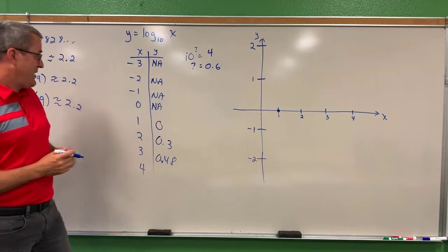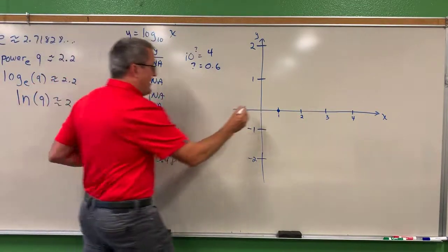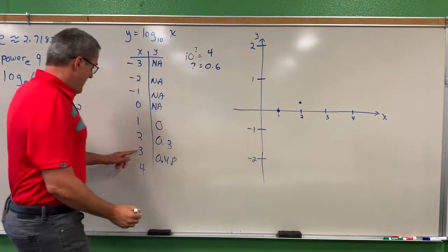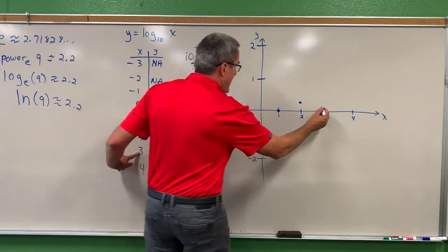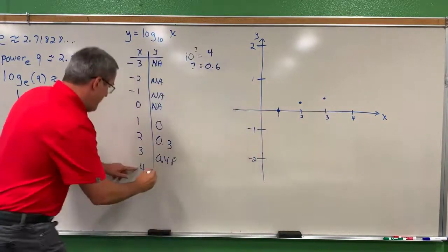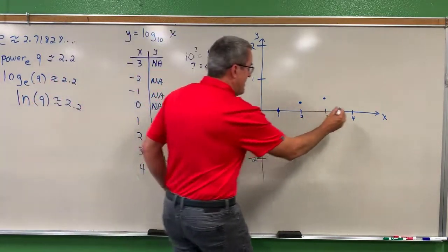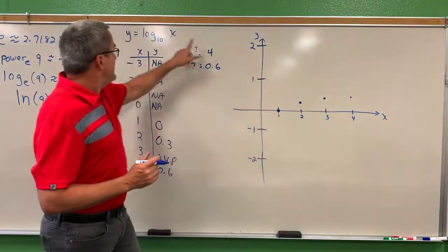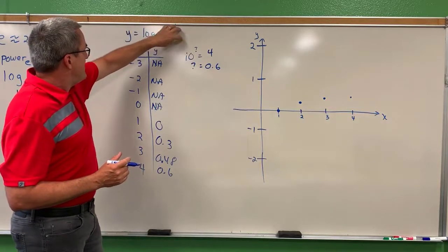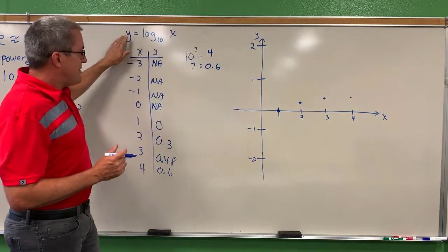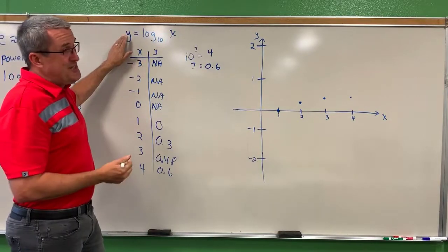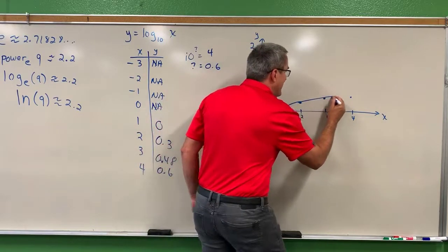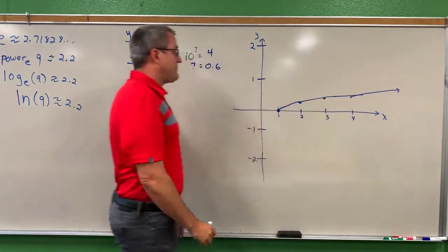So here's what we see. We have the point 1,0. We have the point 2 and about 0.3. I'm just going to ballpark, it's about right there. We have the point 3 and 0.48, maybe about there. 4 and 0.6, so maybe we're just a little bit higher than that. Here's the reality. As X increases, as X increases, the power on 10 that produces that X is going to produce a number that's always going to be a little higher, but it's not going to increase very quickly. So what we see to the right of one is a graph that increases, but it increases ever so slowly.